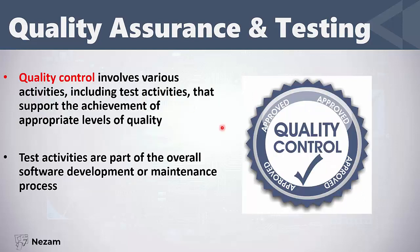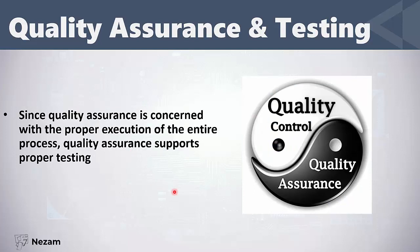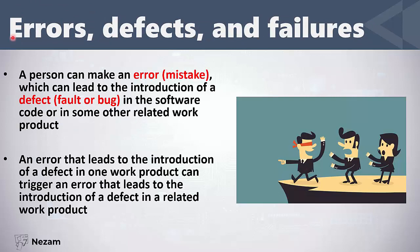Quality control cares about the product's quality, and testing activities are part of quality control, also related to quality assurance. Test activities are part of the overall software development life cycle — from requirements gathering to deployment — and testing is also part of the maintenance process. After delivery, if the customer has complaints, we do maintenance testing to ensure there are no problems. Since quality assurance cares about process execution, it supports proper testing; if the process is correct, testing will be done in a better way.